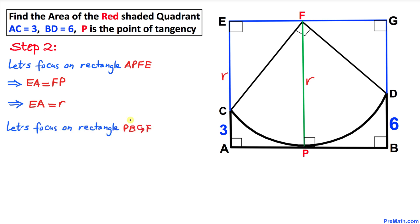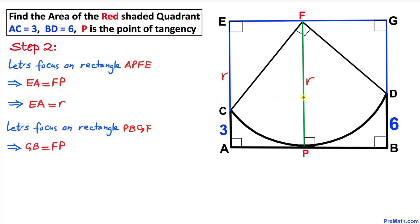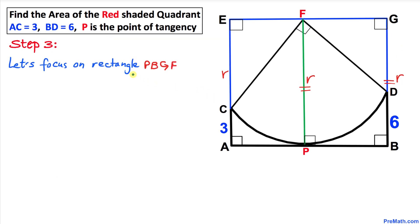Likewise, let's focus on rectangle PBGF. Then length GB equals length FP, and since FP is just the radius r, GB equals r as well. So this side GP is r as well.